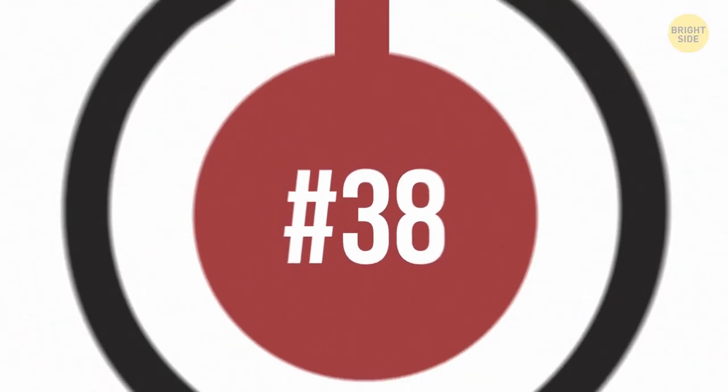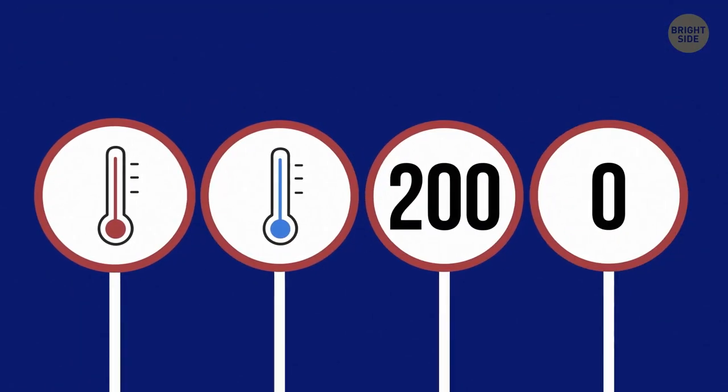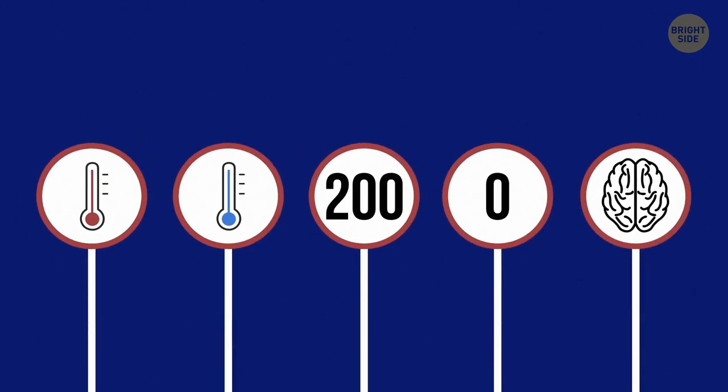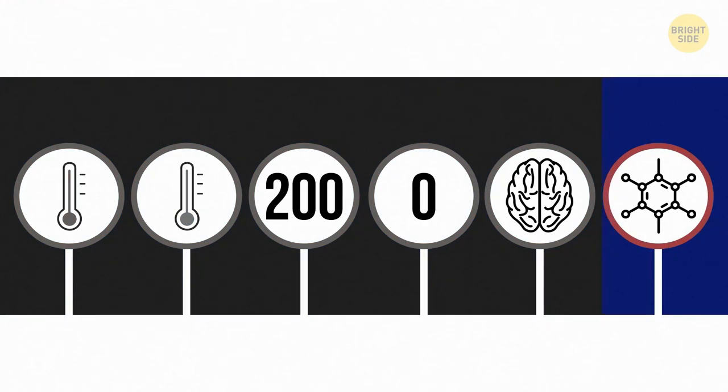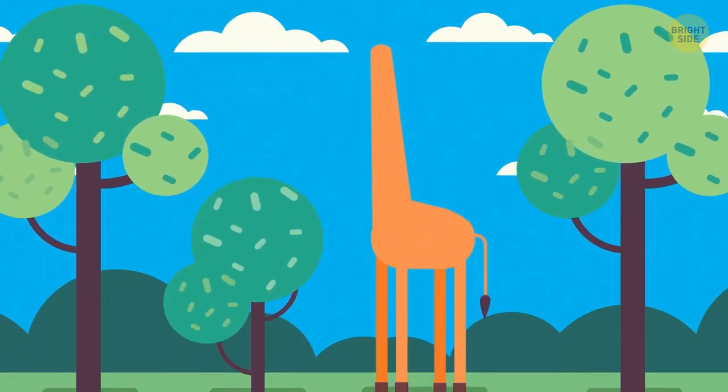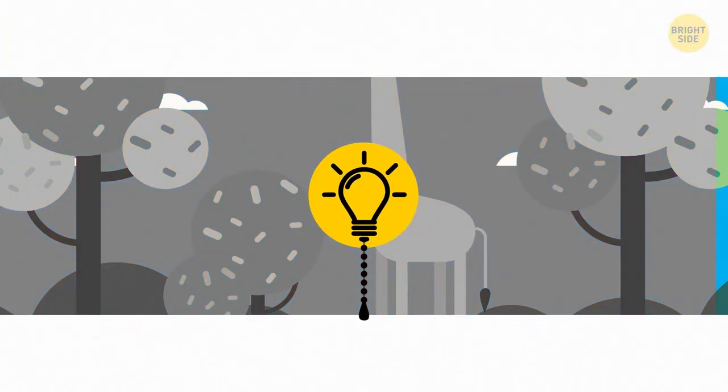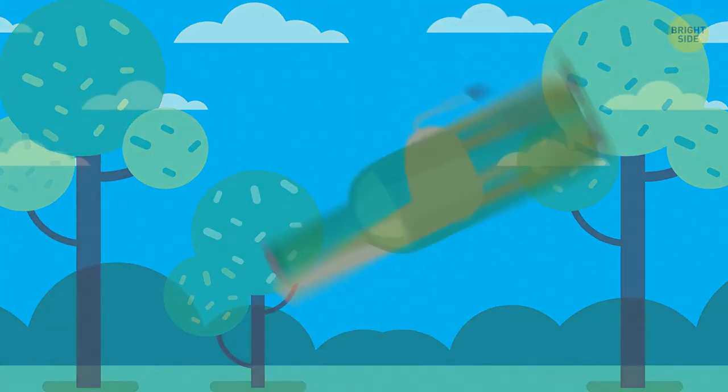38. It can be hot, it can be cold, it can rush, and it can stay still. It can be hard, and it can slip through anything. What is it? It's water! 39. What has a neck but no head at all? A bottle.